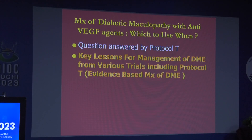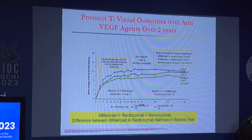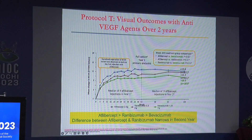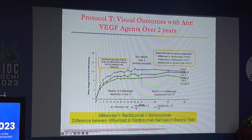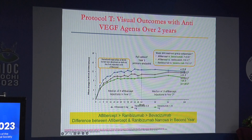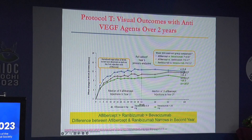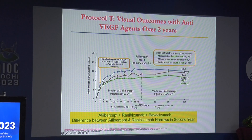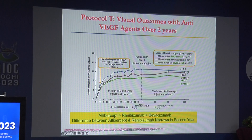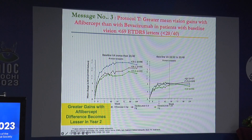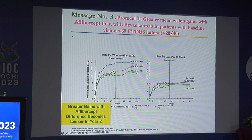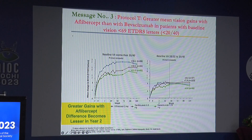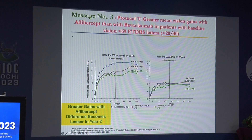Several protocols have come from DRCR.net. Protocol T was a comparison of Aflibercept, Ranibizumab, and Bevacizumab, which showed that during initial treatment there was a dramatic response with all three drugs — maximum with Aflibercept. Over two years, the response of Ranibizumab and Aflibercept came closer, but there was a statistical difference compared to Bevacizumab. It also showed that patients with visual acuity less than 20/40 had much higher benefit with Aflibercept. So the take-home message is: if a patient has vision less than 20/40, the choice of agent is Aflibercept.